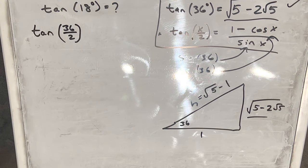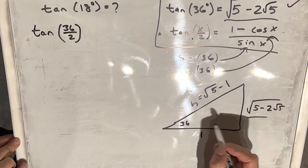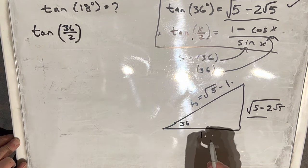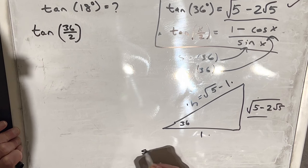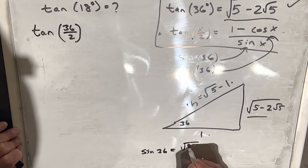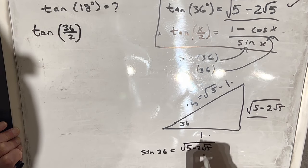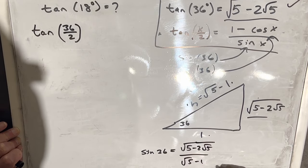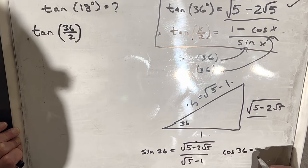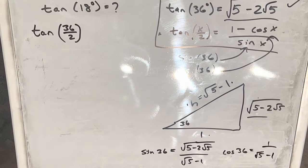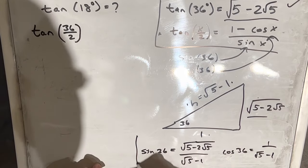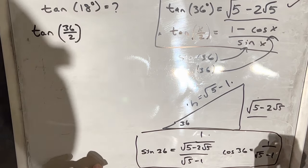Now finding sin(36°) and cos(36°) is straightforward. Sine is opposite over hypotenuse, and cosine is adjacent over hypotenuse. So sin(36°) = √(5 − 2√5) / (√5 − 1), and cos(36°) = 1 / (√5 − 1). We now have both values ready to plug into the half-angle formula.